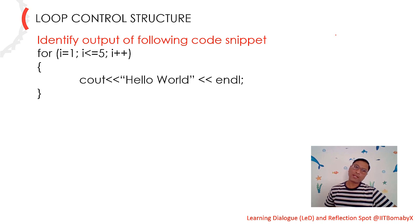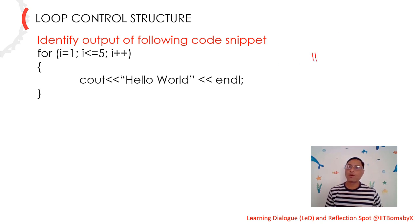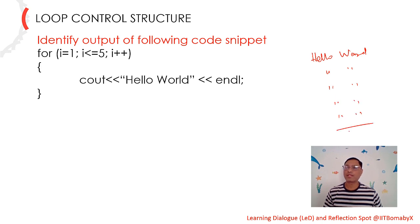Once you understand this, can you tell me the output of this code snippet? Follow the flow of execution control and you will come to know. Someone says the output is hello world printed five times. Yes, that is correct. Hello world one, two, three, four, and five times. Hello world is going to be printed five times. Very good.